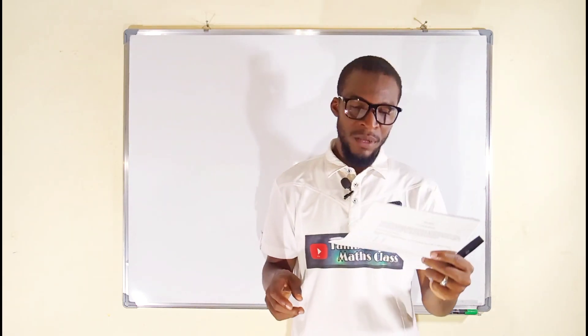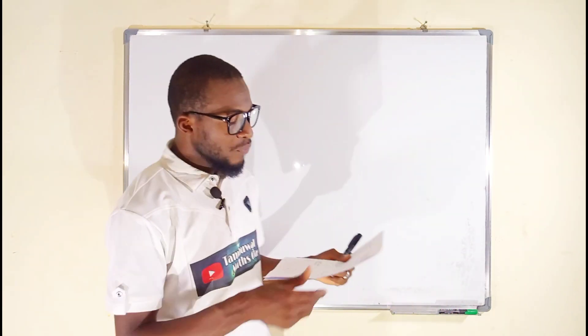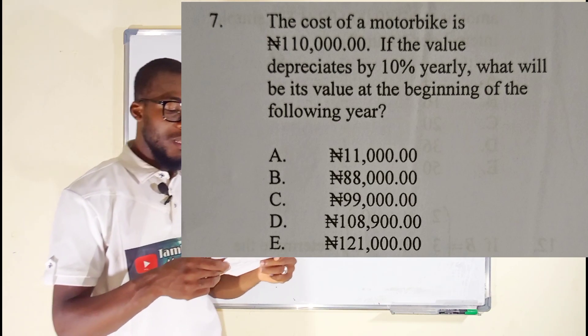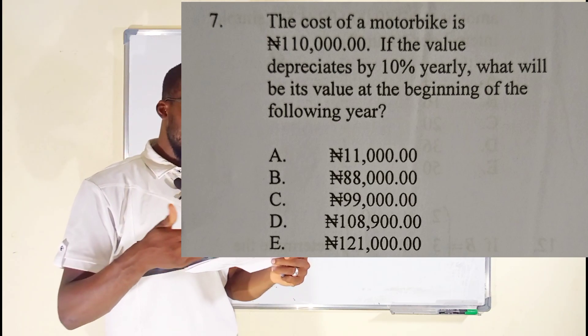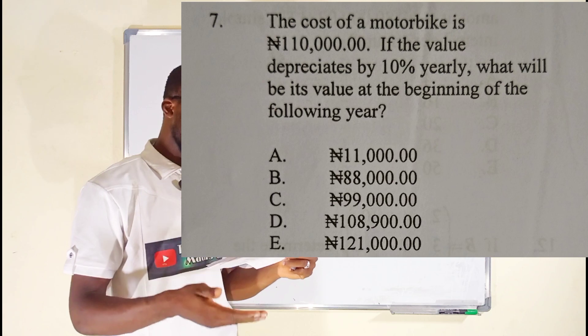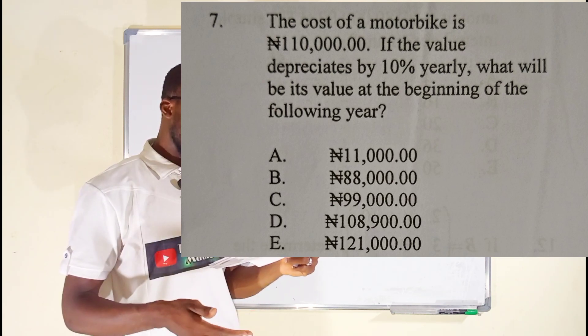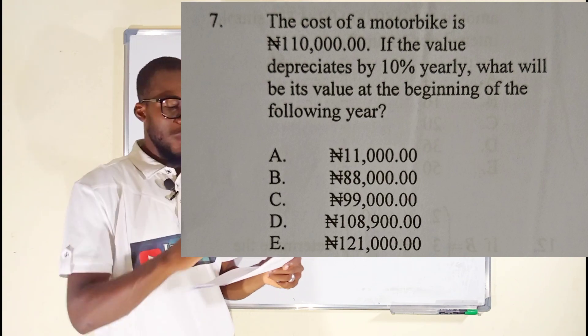This is question number seven. It reads: The cost of a motorbike is N110,000.00. If the value depreciates by 10% yearly, what will be its value at the beginning of the following year?